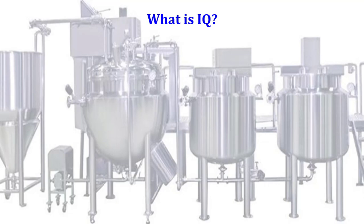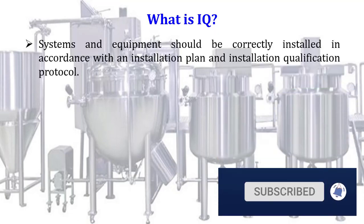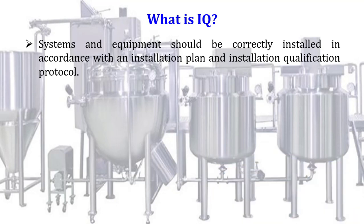So what is IQ or installation qualification? Systems and equipment should be correctly installed in accordance with an installation plan and installation qualification protocol. The system which we have procured should be installed at a particular location to perform or to use it for its intended use, commissioned or installed as per the requirements.